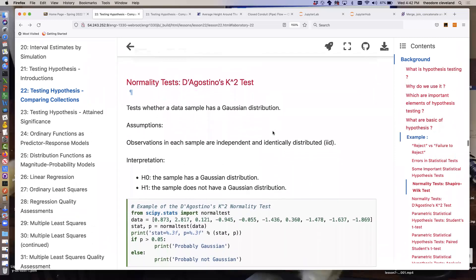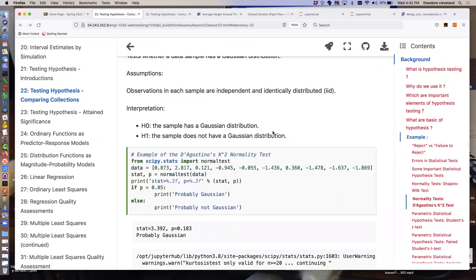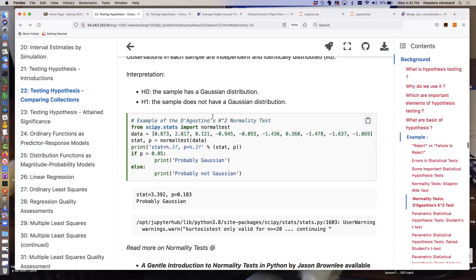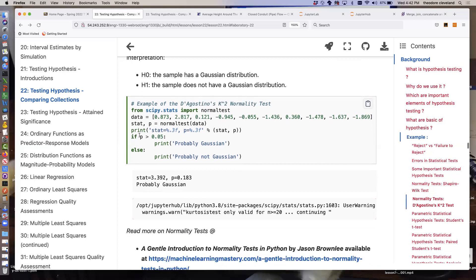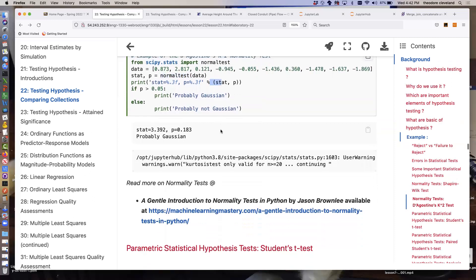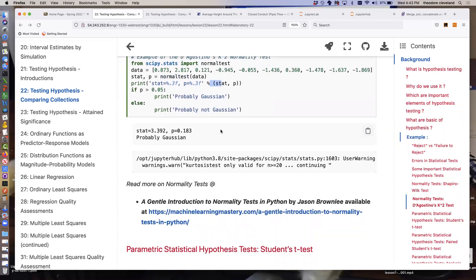Another test is called D'Agostino's K-squared test. And this test, again, whether a sample is Gaussian or not, the assumptions are observations are independent and identically distributed. The null hypothesis, Gaussian. The alternative hypothesis, not Gaussian. We'll do the same thing with the same information. And the name of the test in SciPy.Stats is called normaltest. And again, we're going to print the value of the statistic and the p-value at rejection. Sure enough, the p-value is bigger than our arbitrarily selected rejection probability. Therefore, we do not reject the null hypothesis. The null hypothesis was Gaussian.